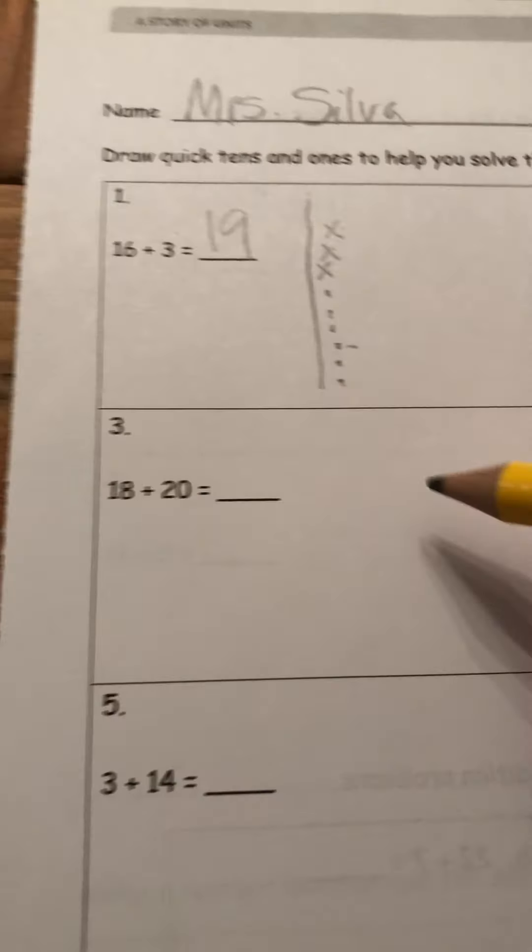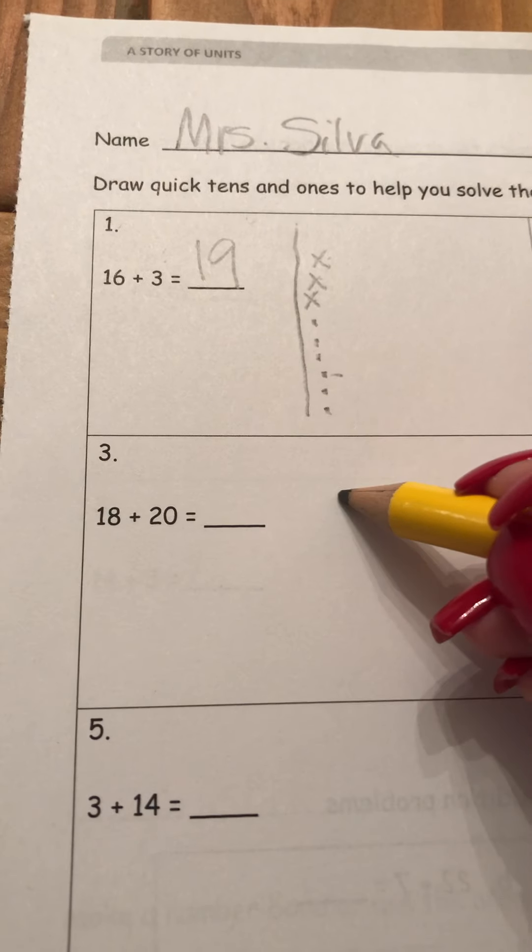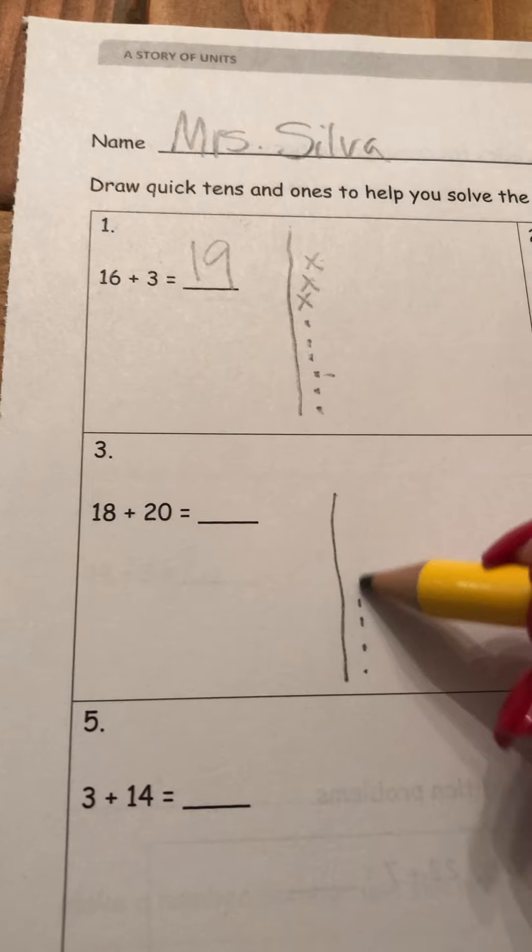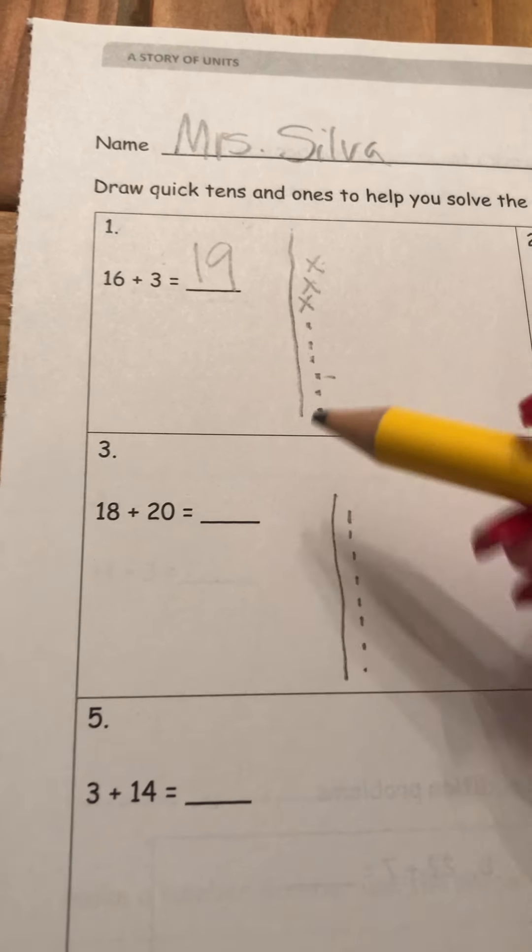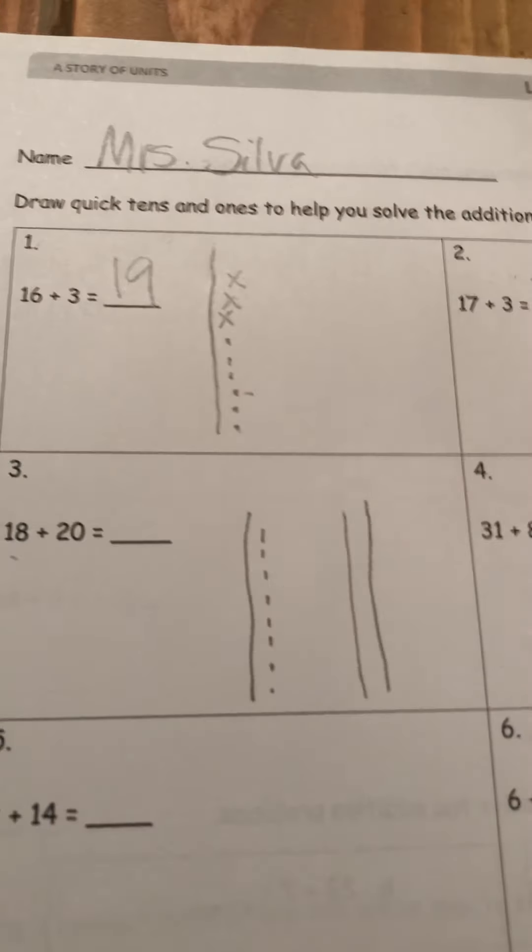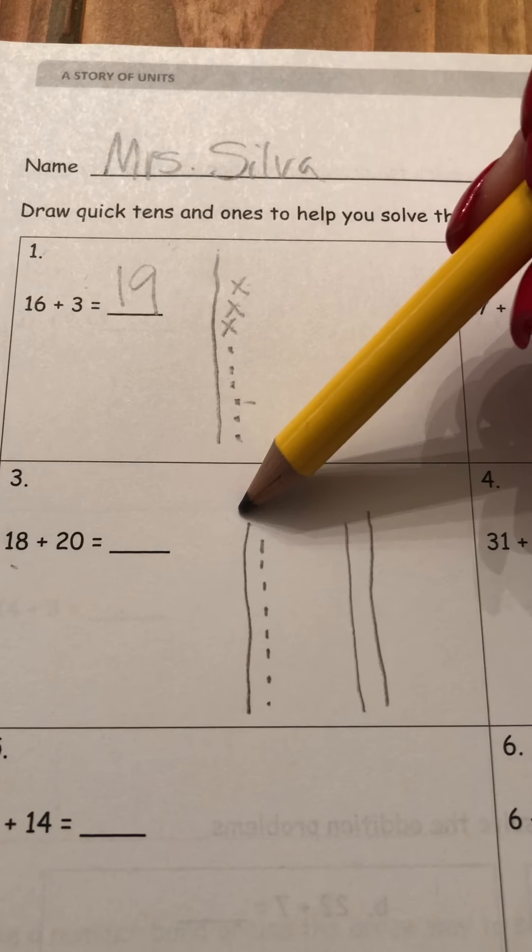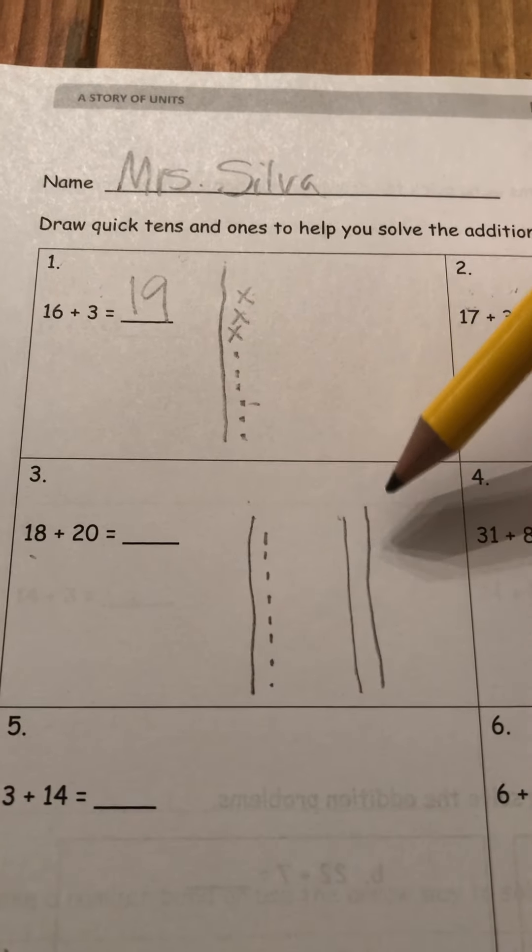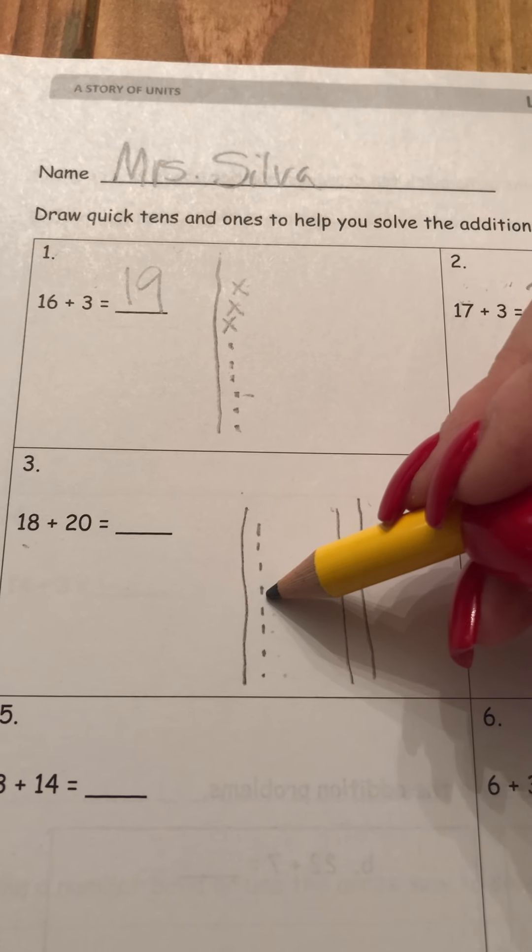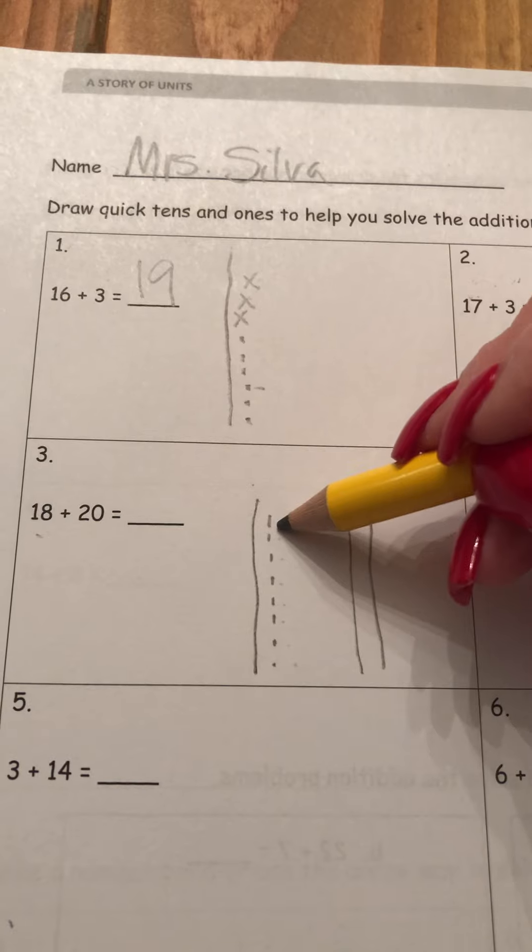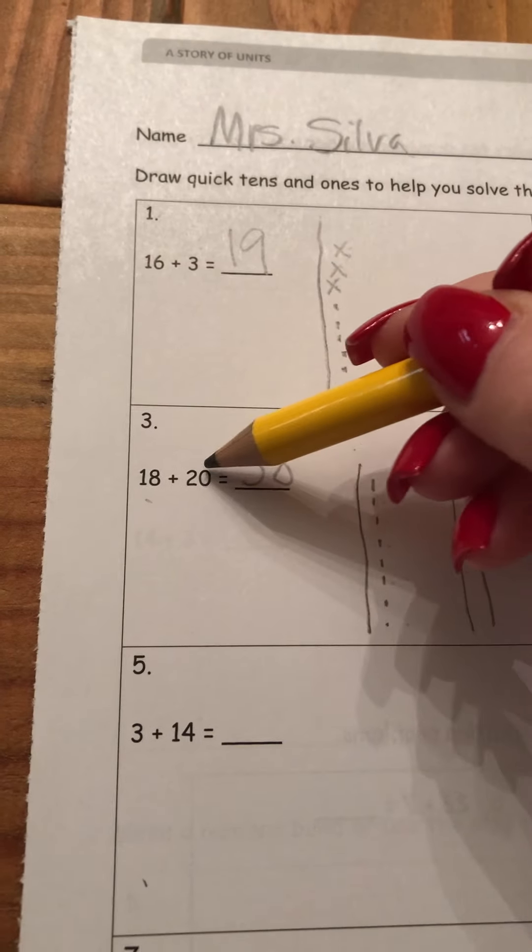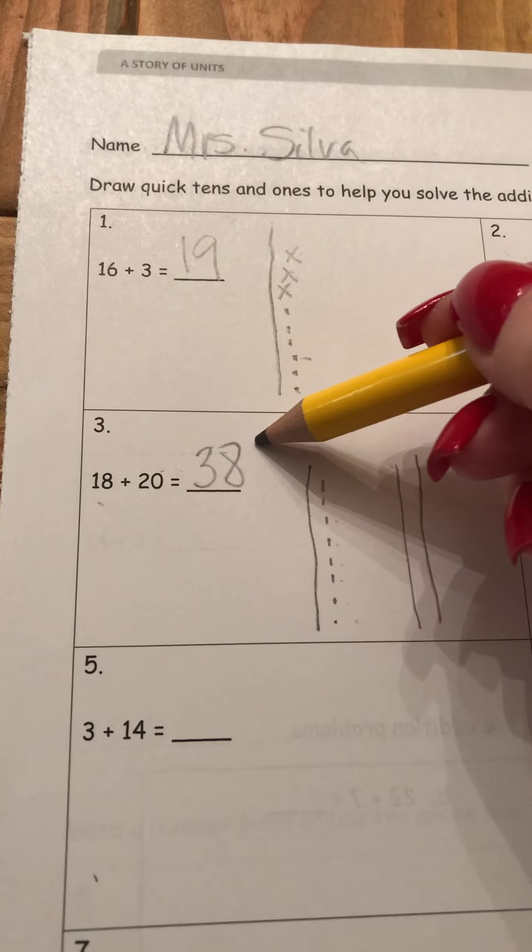18. The next one has lots of quick tens to draw. 10, 11, 12, 13, 14, 15, 16, 17, 18, and then 20 is two quick tens. And we're going to add them up. 10, 20, 30, 31, 32, 33, 34, 35, 36, 37, 38. 18 plus 20 equals 38.